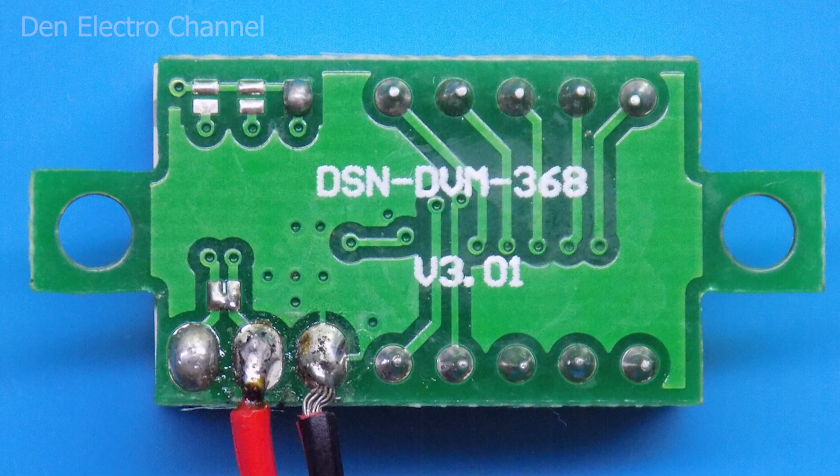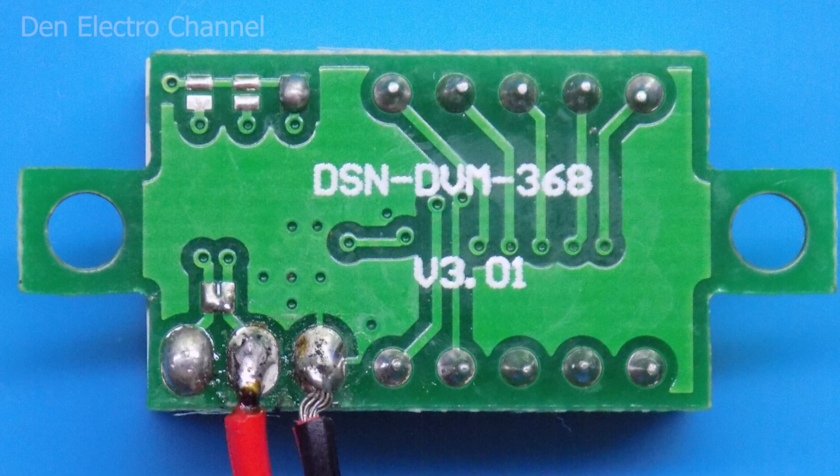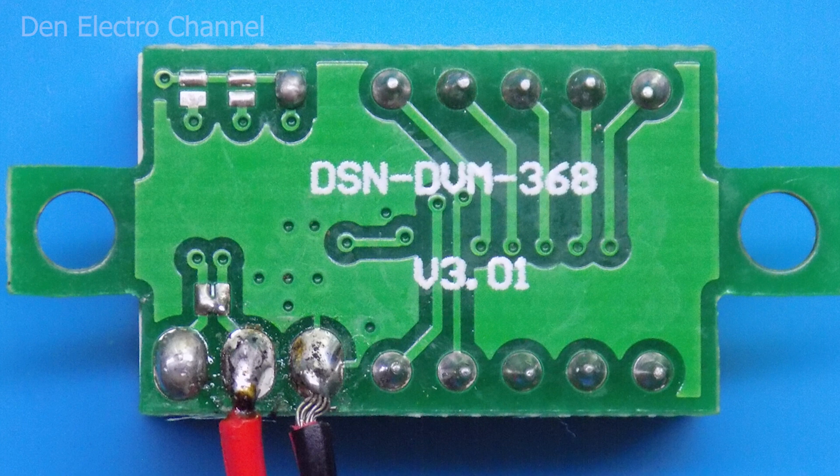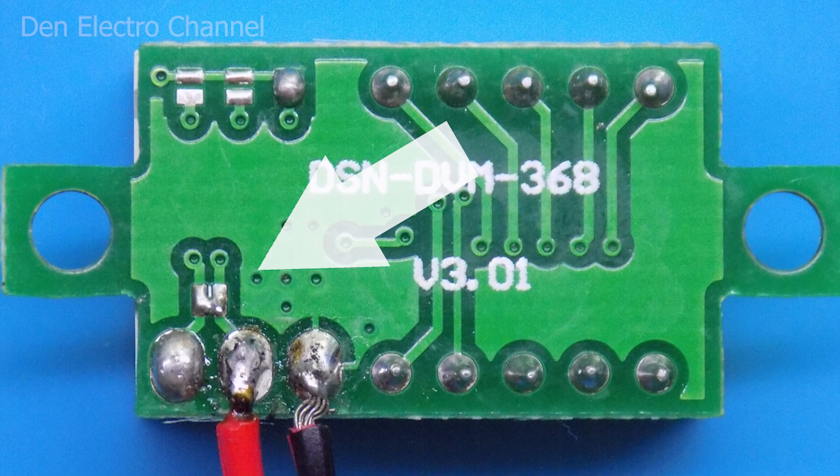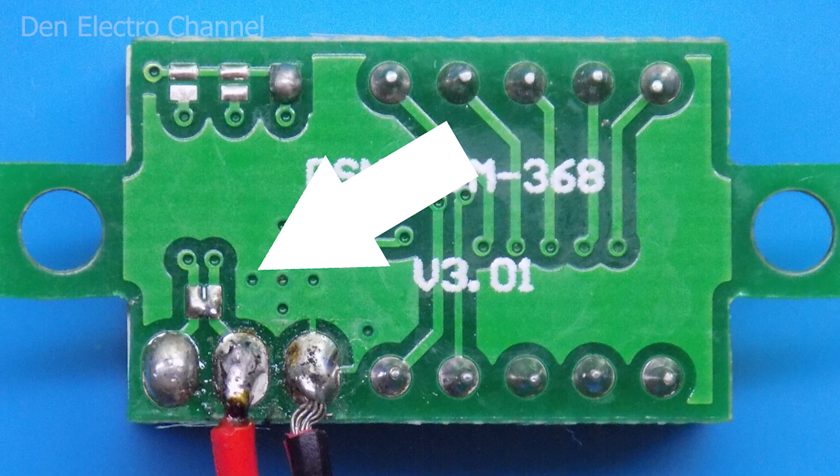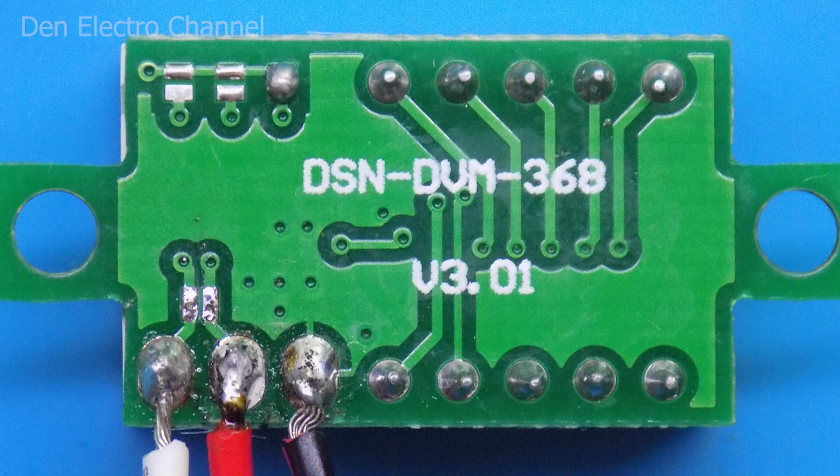On the back of the board is a place where the wires are soldered. There are three small polygons for soldering. The first is empty, and plus and minus are connected to the second and third. Between the first and second, there is a small jumper in the form of a drop of tin. Having removed the jumper, I soldered another wire to the first polygon.